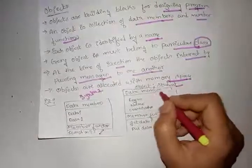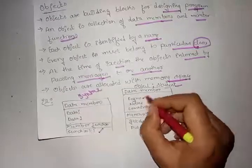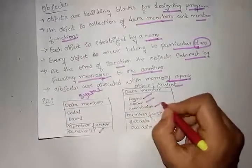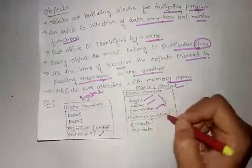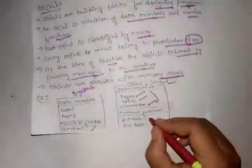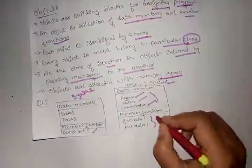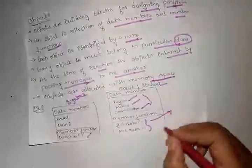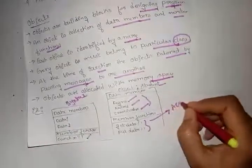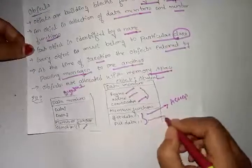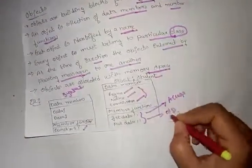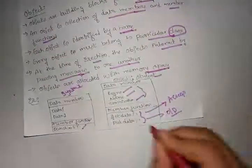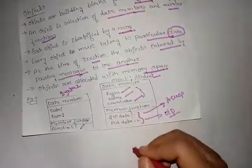Objects are allocated with memory space. For example, an object has data members such as data1 and data2, and member functions such as get data and put data, which are used to display output to the screen.